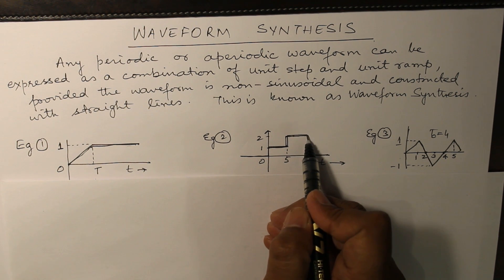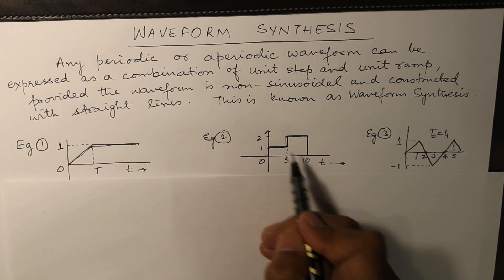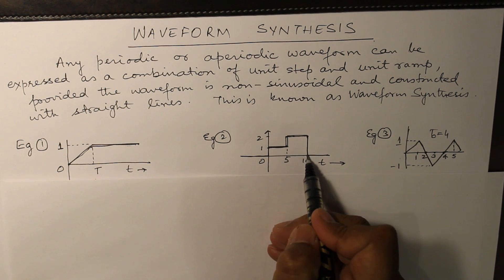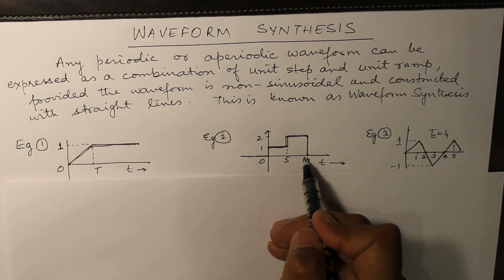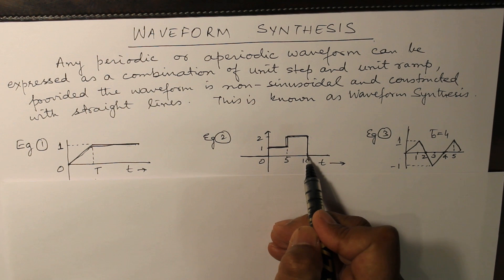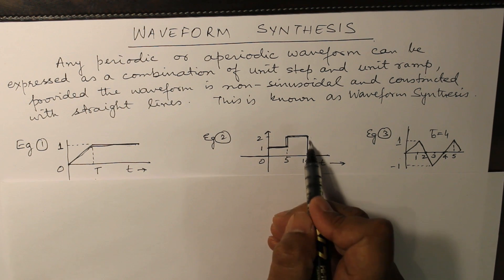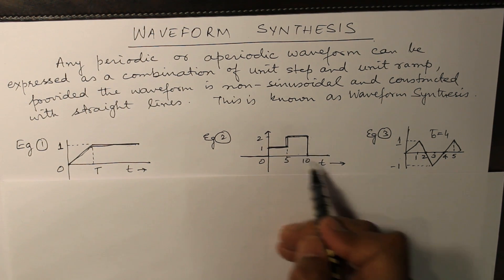After that, the magnitude has to become zero — from 2 to 0. Therefore there will be another step signal of 2 units in the negative direction, which will neutralize the previous values and give you the resulting waveform.